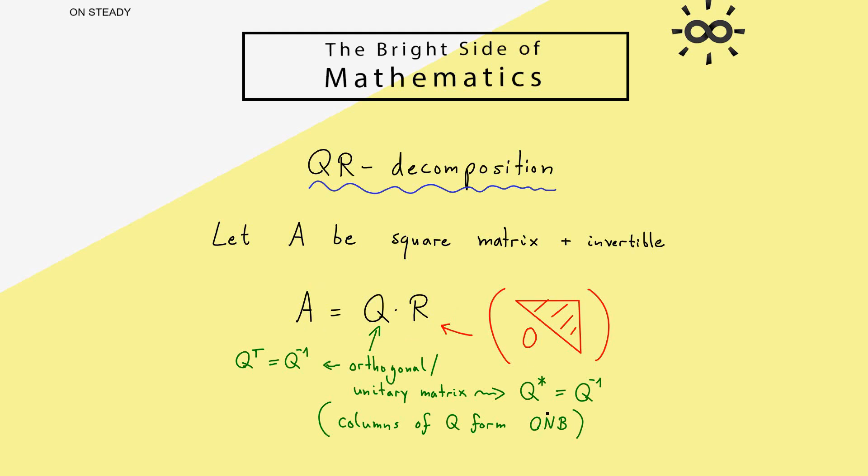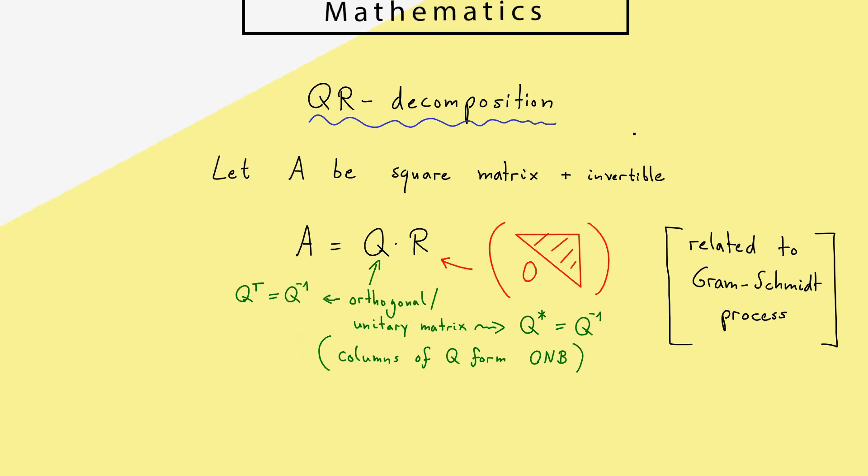So now please recall an orthonormal basis, or in short an ONB, is a basis where each element has length 1 and two different elements are orthogonal. Hence, it shouldn't surprise you that the whole QR decomposition is related to another thing, which is called the Gram-Schmidt process. In fact, I would say they are completely the same thing.